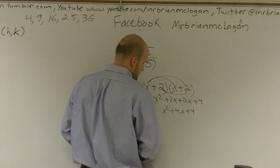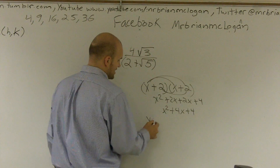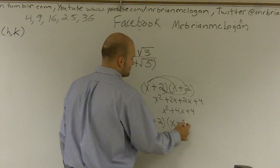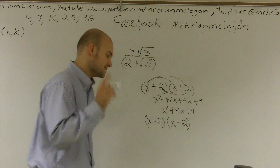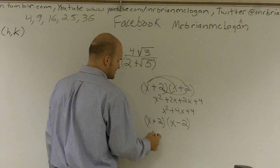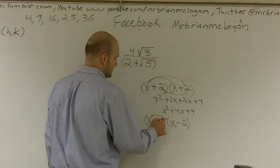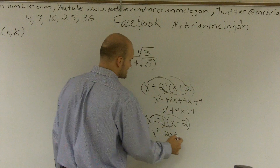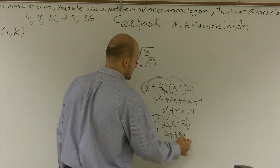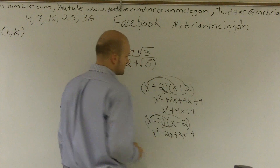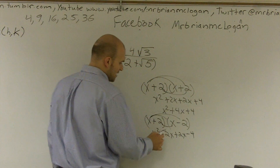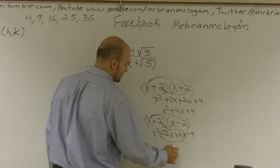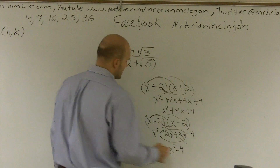However, if I do x plus 2 times x minus 2, something very important happens. I still have x squared, then negative 2x, then positive 2x, and then negative 4 at the end. The middle terms cancel to zero, so I'm left with x squared minus 4.